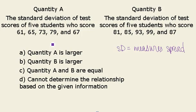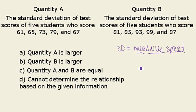However, upon closer investigation we see that 61 and 81 are exactly 20 units apart, 65 and 85 again 20 units apart, 73 and 93, and so on. They're all exactly 20 units apart, which means that the spread of those variables from the mean will be exactly the same. Therefore we can assume that Quantity A and B are equal.